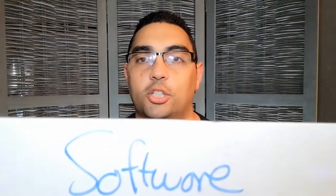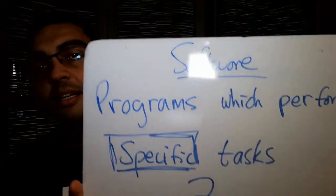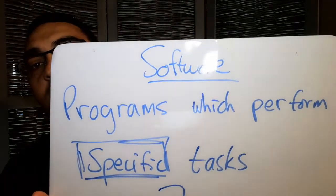Our first concept is software. When they ask you what is software, it starts simple but then as we go down there's a lot of information. First things first: software is programs which perform specific tasks. I've highlighted that — these are programs that perform specific tasks. This is what we're talking about when we use the term software.